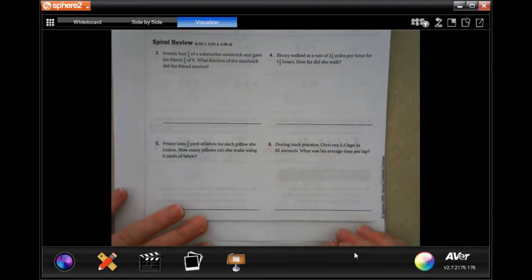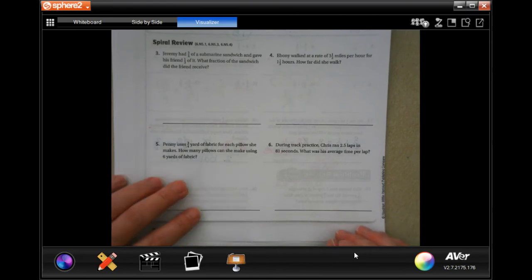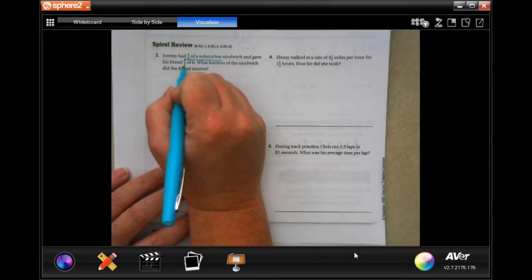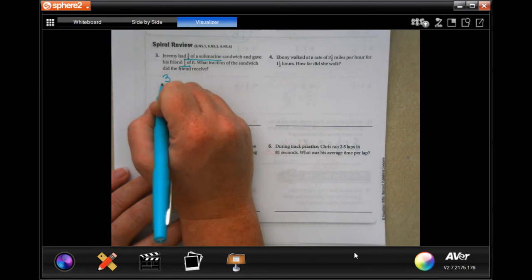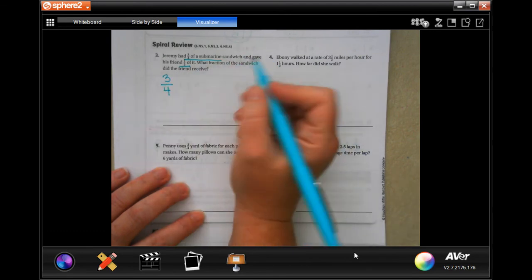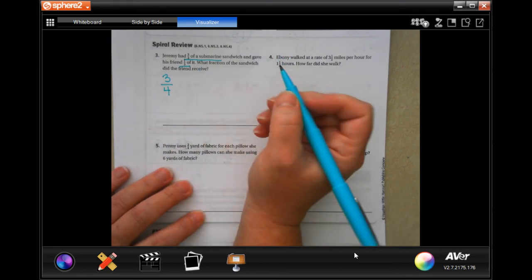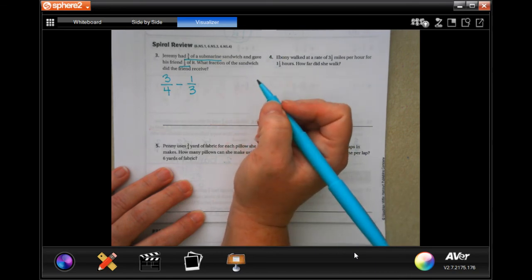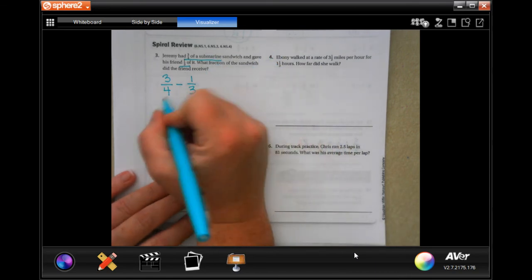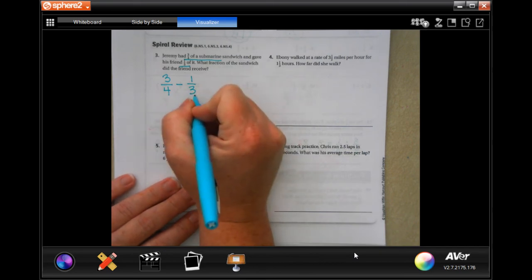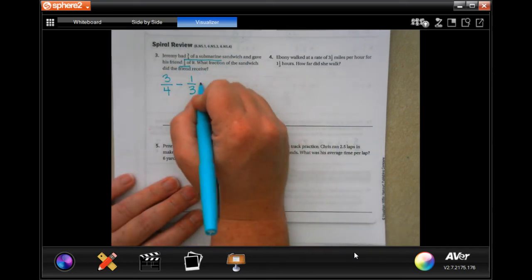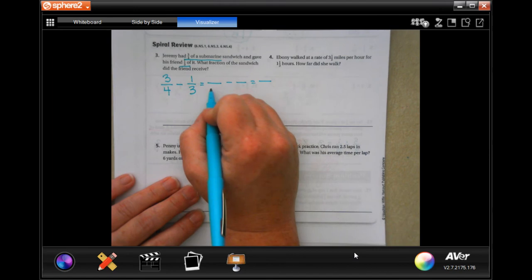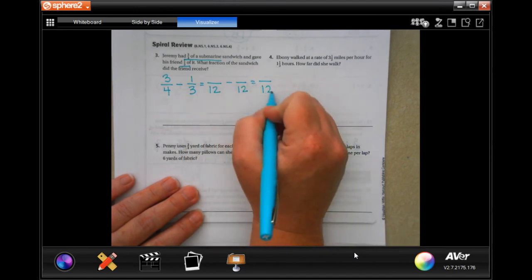Jeremy had three-quarters of a submarine sandwich and gave his friend a third of it. What fraction of the sandwich did the friend receive? Well, he had three-quarters of a sub. He gave his friend a third of it. So three-quarters minus one-third. So now, in order to subtract fractions, they have to have a common denominator. So the smallest number that 4 and 3 both go into is going to be 12. That should be your denominator now all the way across.